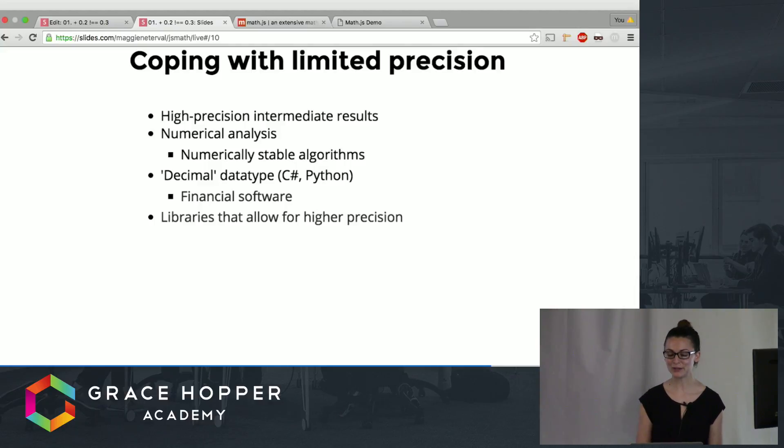There's an entire field called numerical analysis which deals with numerically stable algorithms which are algorithms specifically designed to decrease the rounding errors that can happen this way.